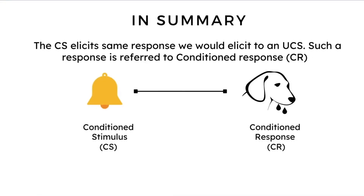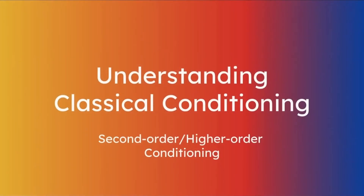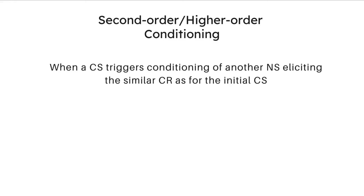Let's now move on to the last part of the video: the concept of second-order or higher-order conditioning. If you understand classical conditioning, understanding second-order or higher-order conditioning should not be difficult. Essentially, it is a situation in which the constant pairing of a novel neutral stimulus with a previously conditioned stimulus eventually elicits the same conditioned responses to the novel neutral stimulus. In other words, pairing a novel neutral stimulus with a previously conditioned stimulus results in second-order or higher-order conditioning.